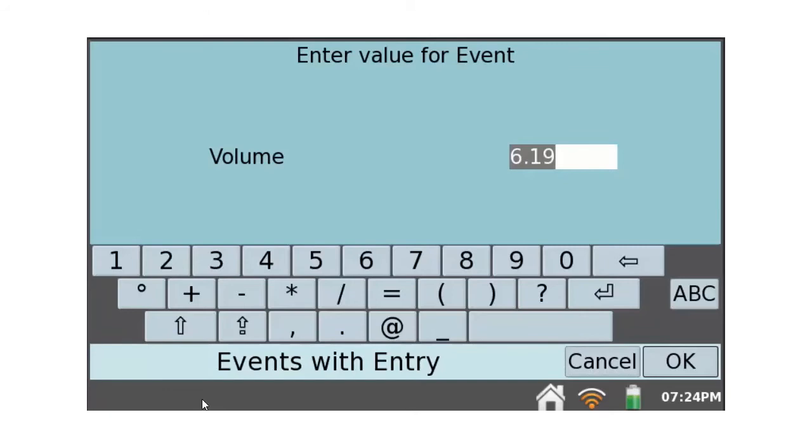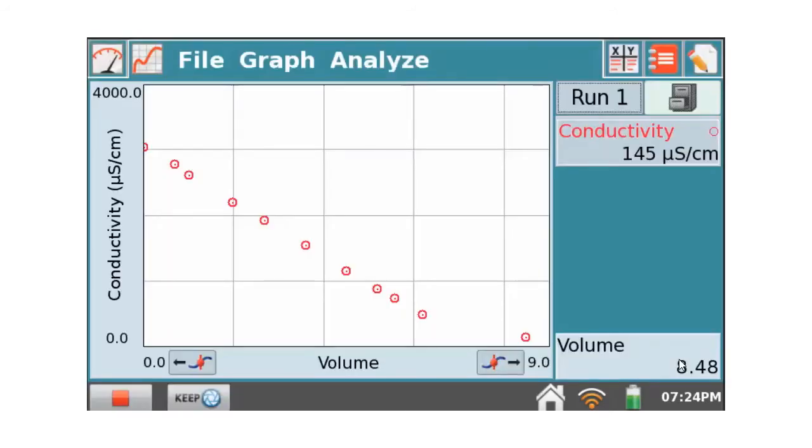We just do that because I kind of like doing that. Then here you type in whatever volume corresponds to that particular addition. In this case it was 8.48 milliliters. Type that, hit the okay down below, and now you've got that piece of data in. You can do this for several data points along the way.